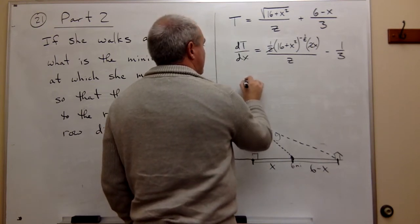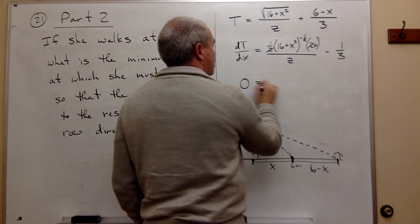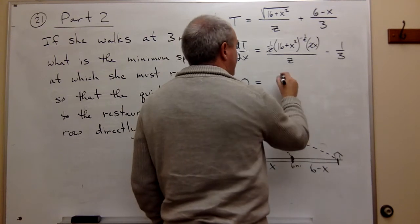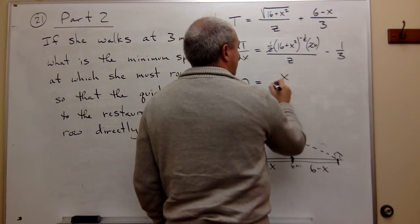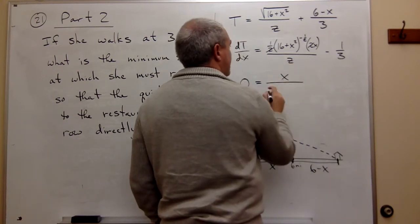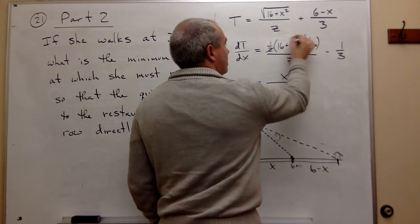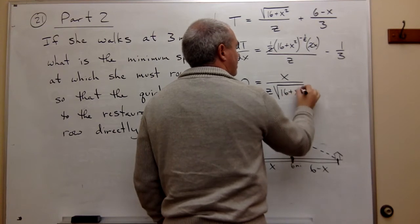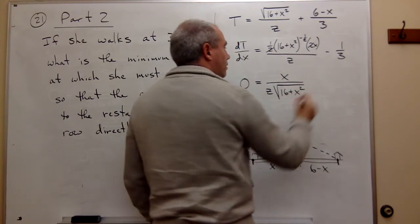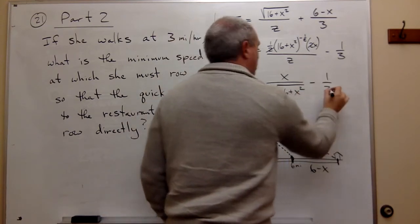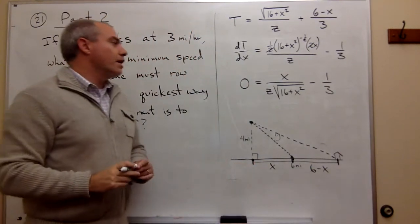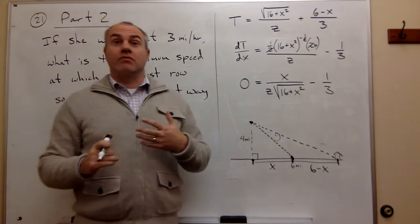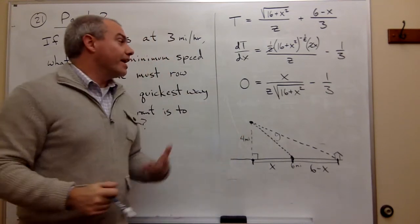This is, I'll set it equal to zero. Zero is equal to—on top I get x, on bottom I get z times the square root of (16 + x²), minus one third.